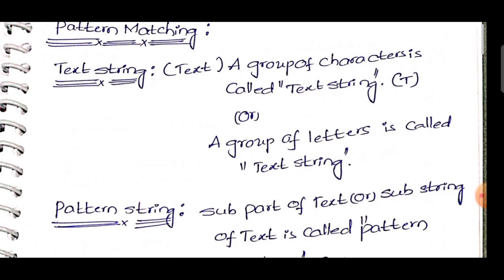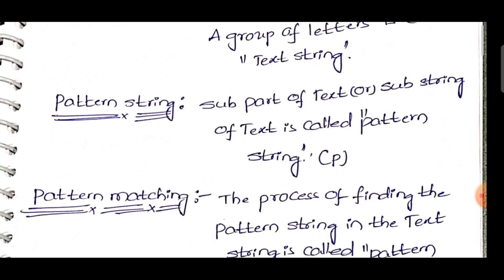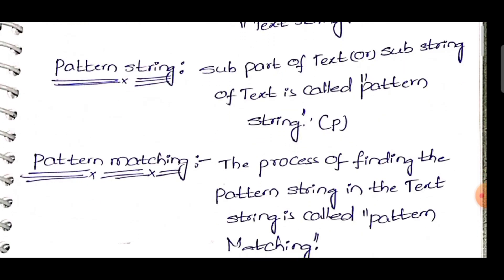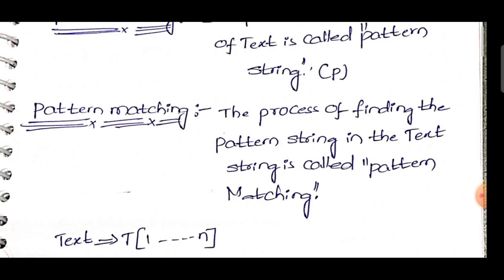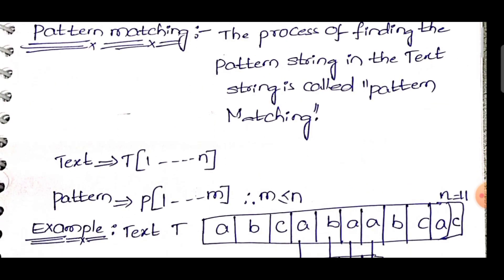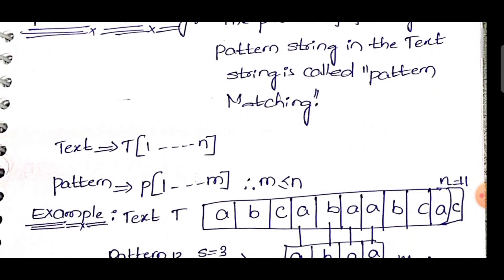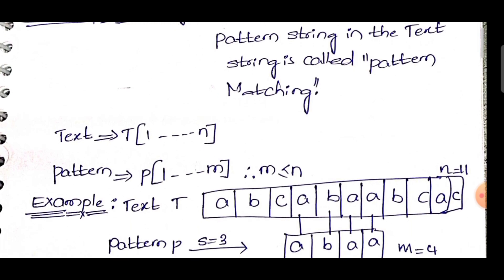The text string is denoted by T and the pattern string is denoted by P. Pattern matching is the process of finding the pattern string in the text string. The text string starts and ends with n value, and the pattern starts and ends with m value.